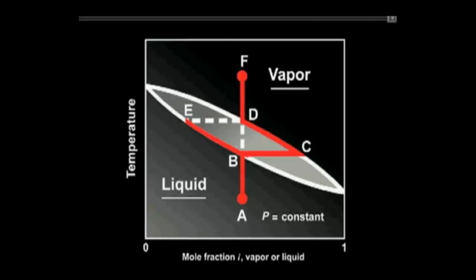The process could be reversed, starting with vapor at point F and finally ending with the subcooled liquid at point A.